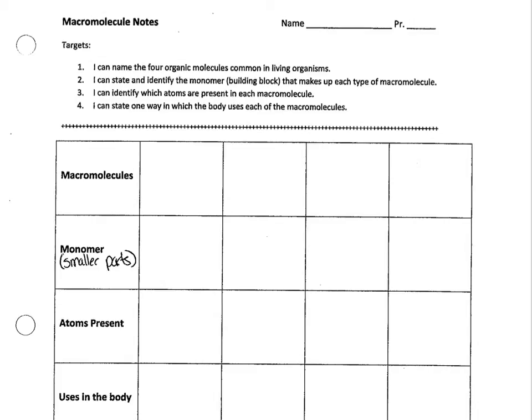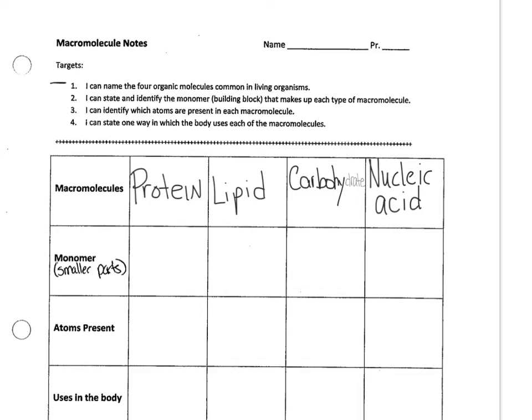All of these macromolecules should be starting to become a bit familiar to you. The first thing we're going to do is name the four organic molecules common in living organisms. You can see at the top of your paper there are targets we are going to reach with this videocast. The top of your paper should look like mine with protein, lipid, carbohydrate, and nucleic acid for our four macromolecules. If you need to, go ahead and pause the video to fill these items in.